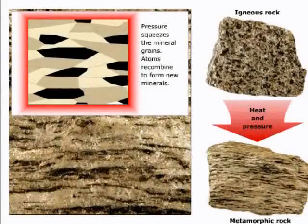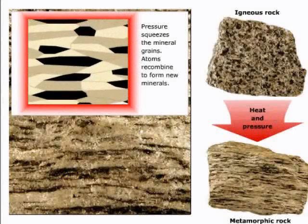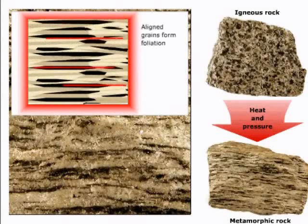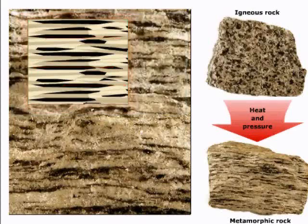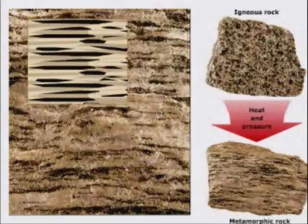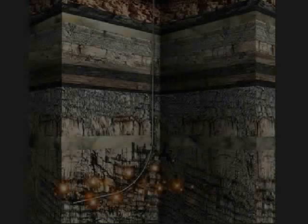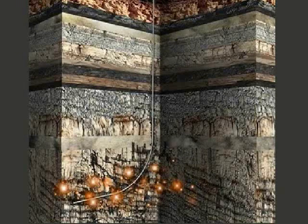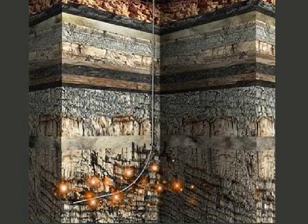Finally, metamorphic rock is formed when plate margin movement causes rock to be pushed down and transformed. In the oil industry, we care mostly about sedimentary rock because that is where the oil is — where we find the hydrocarbons. The presence of hydrocarbons in sedimentary rock is why we search for this type of rock.